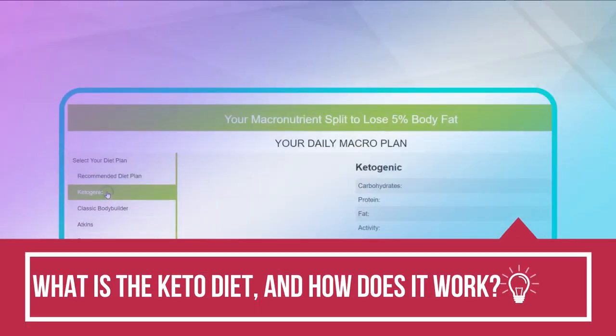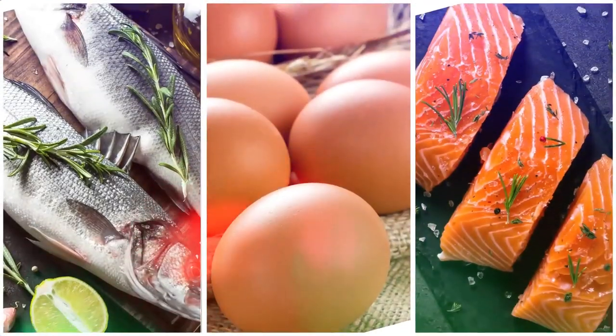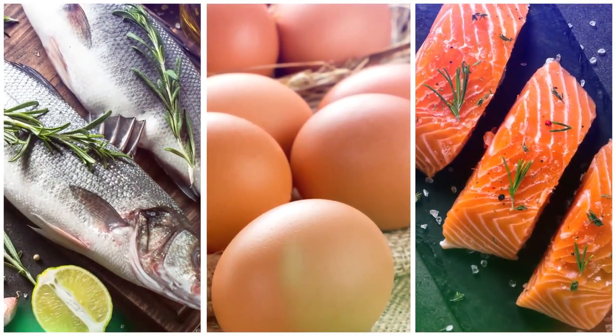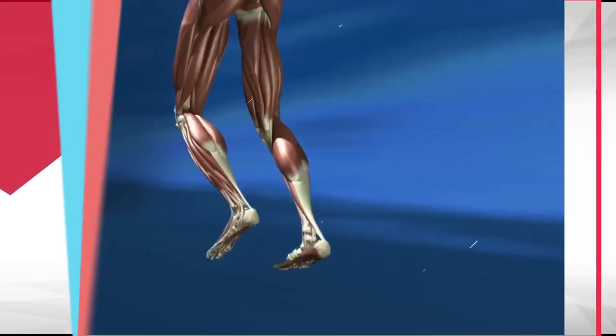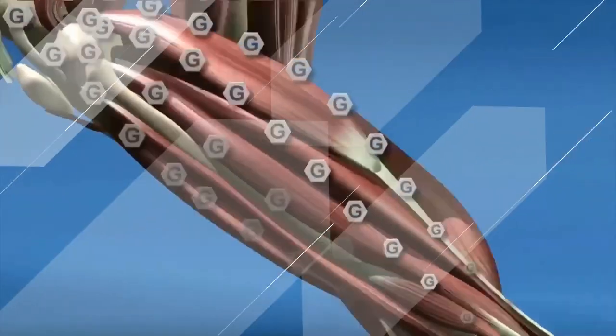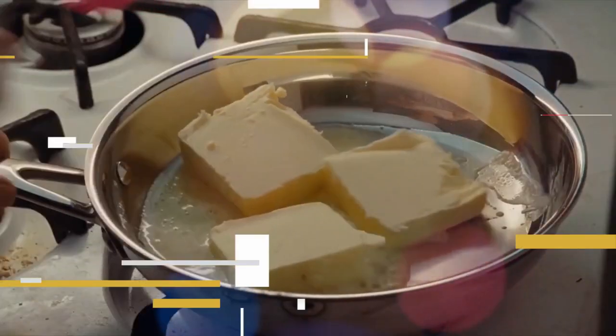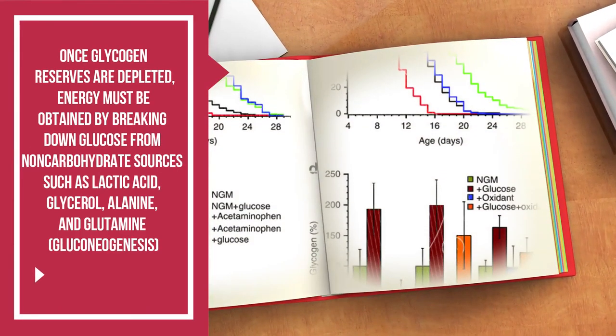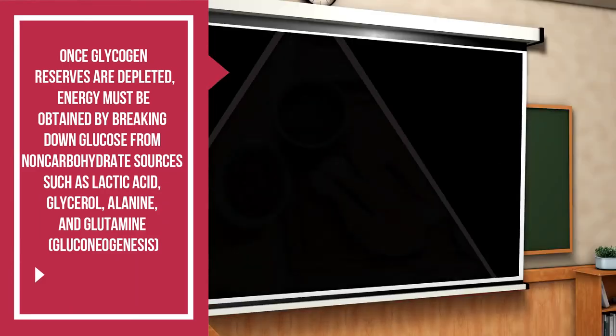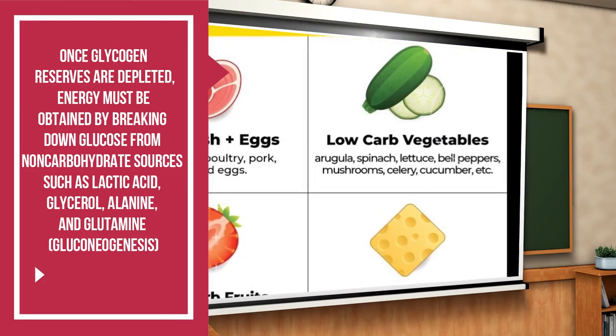What is the keto diet and how does it work? A ketogenic diet is aimed to drive the body to transition from glucose to fat as its primary energy source. It has a high fat content, a moderate protein content, and a shallow carbohydrate content. The body must move from glucose as its principal energy source by drastically lowering carbohydrate consumption. Significantly less insulin is released, and catabolism is promoted when the body gets less than 50 grams of carbohydrate each day. Once glycogen reserves are depleted, energy must be obtained by breaking down glucose from non-carbohydrate sources such as lactic acid, glycerol, alanine, and glutamine through gluconeogenesis.